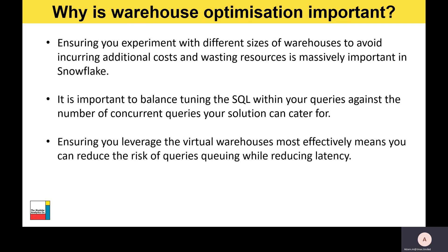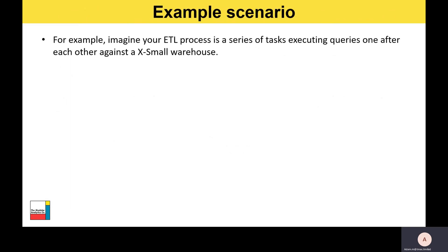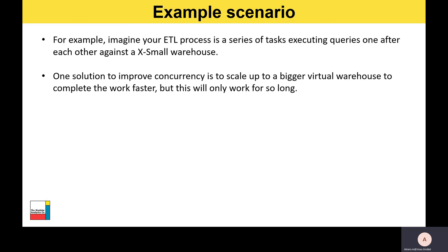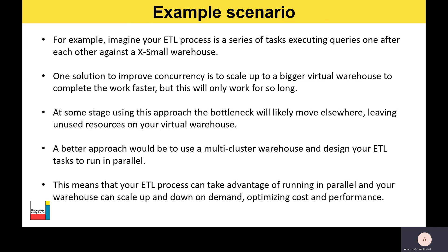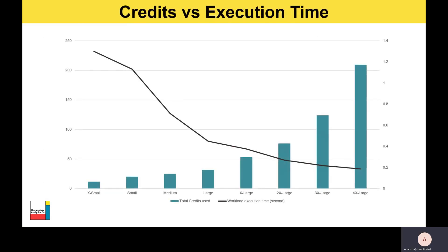Ensuring you leverage virtual warehouses most effectively means you can reduce the risk of queries queuing while reducing latency. As an example scenario, imagine you have an ETL process which is simply a series of tasks executing queries one after another against an extra-small warehouse. One solution is to scale up to a bigger virtual warehouse to complete the work faster, but this will only work for so long — the bottleneck will eventually move elsewhere, leaving unused resources. A better approach is to use a multi-cluster warehouse and design your ETL tasks to run in parallel, so your warehouse can scale up and down on demand, optimizing both cost and performance.